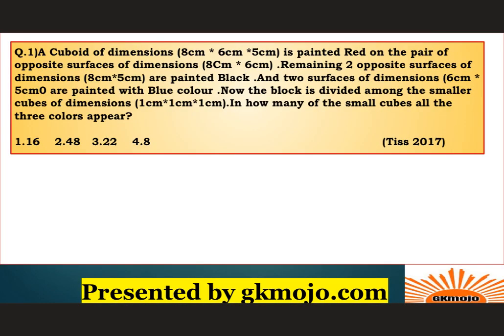Question 1: A cuboid of dimensions 8 cm × 6 cm × 5 cm is painted red on the pair of opposite surfaces of dimensions 8 cm × 6 cm. The remaining two surfaces of dimensions 8 cm × 5 cm are painted black, and the two surfaces of dimension 6 cm × 5 cm are painted blue. The block is divided into smaller cubes of 1 cm × 1 cm × 1 cm. In how many of the small cubes do all three colors appear?